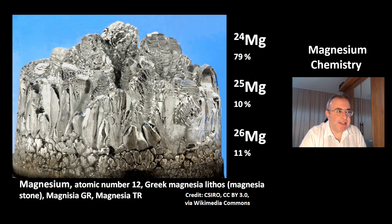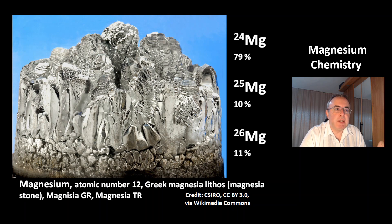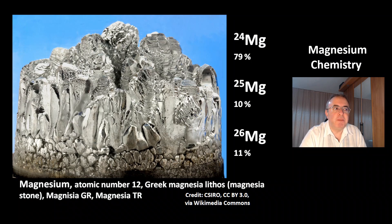The name magnesium — its origin is not clear. It could be the Greek word Magnesia lithos, which means Magnesia Stone, or it could be from the Greek city of Magnesia, or from the Turkish city of Magnesia.